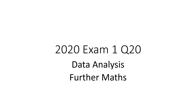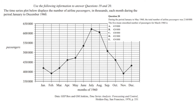2020, Exam 1, Question 20, Dietary Analysis. Apologies for the small writing — I had to fit all this stuff on one slide. Now looking at January to May, they've given us a total of 2.16 million and we're doing 5-point mean smoothing.